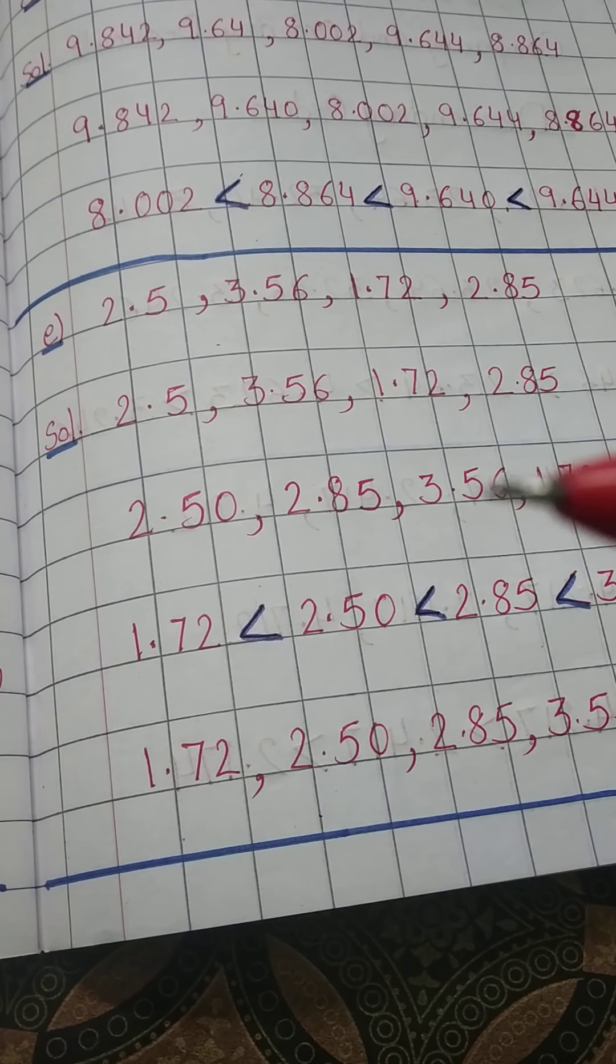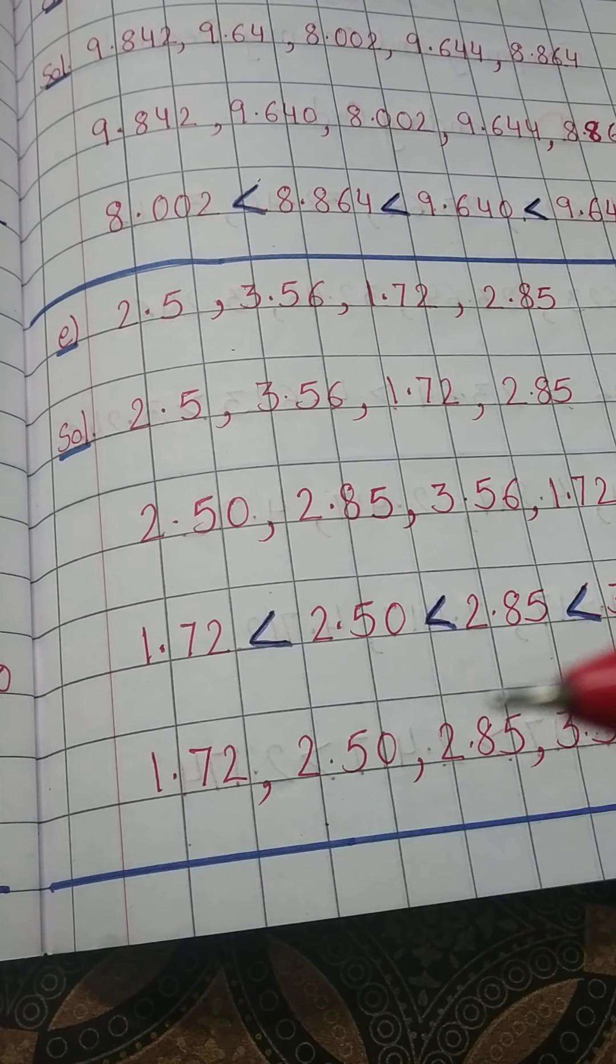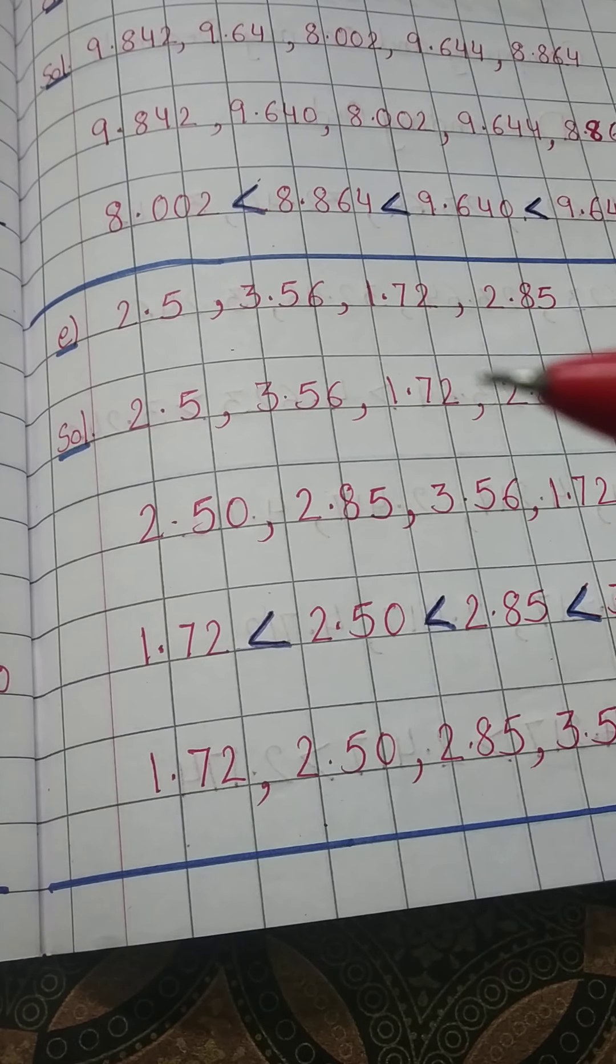So some rules I have told you in previous videos. You can watch those videos and make the rules clear. Last question is 2.5, 3.56, 1.72, 2.85.